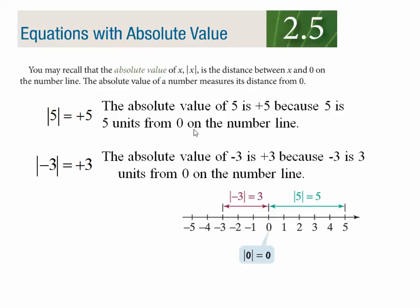The definition of absolute value — I took this from a different textbook because I didn't think ours defined it well enough. Absolute value is defined to be the distance from that number back to 0. So the absolute value of 5 is asking: what's the distance from 0 to 5? That's 5. The absolute value of negative 3 is still 3, because distance from 0 to negative 3 is 3. Positives stay positive, negatives turn positive. Distance is always positive.